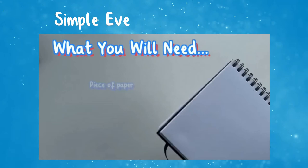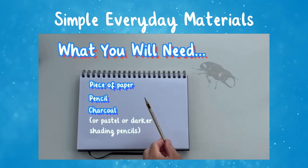You will need a piece of paper, a pencil, charcoal or pastel or other darker shading pencils, a rubber and a sharpener.